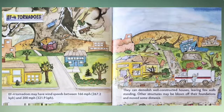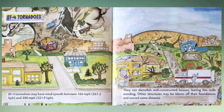EF4 tornadoes may have wind speeds between 166 mph and 200 mph. They can demolish well-constructed houses, leaving few walls standing. Other structures may be blown off their foundations and moved some distance.